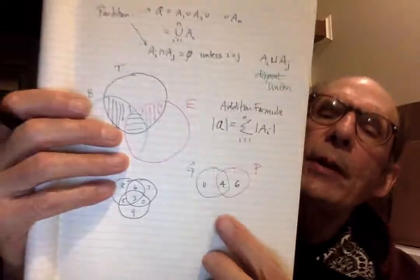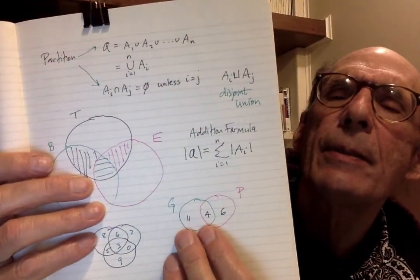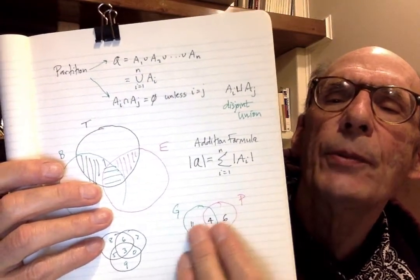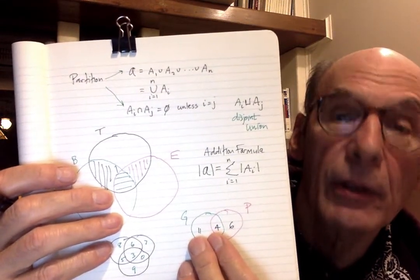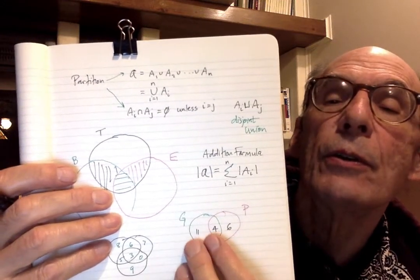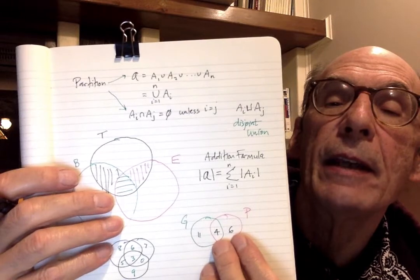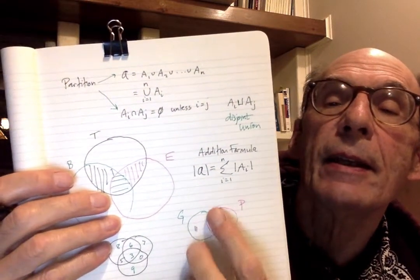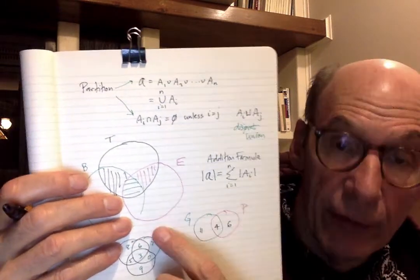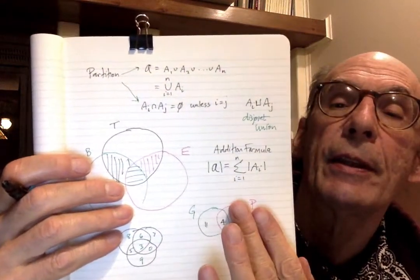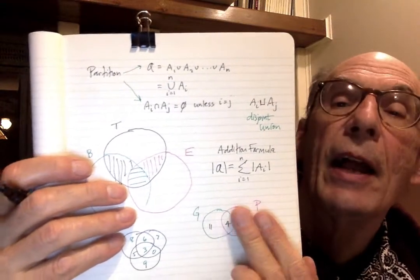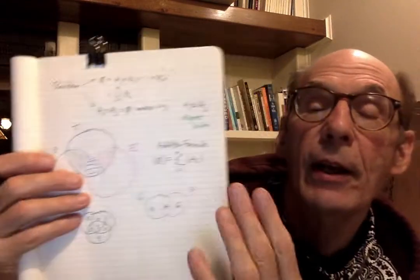Let's make up some numbers: 11, 4, and 6. G has 11 plus 4, so G has 15. P has 4 plus 6, so P has 10. The problem is those four elements in the intersection got counted as part of G and also counted as part of P — they got counted twice.